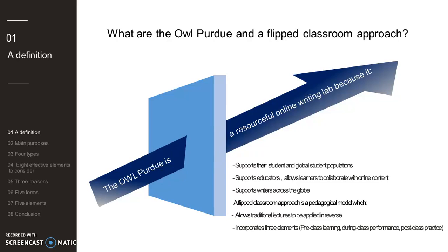The first element is the pre-class element, which allows students to engage in a flexible environment — they can choose when and where they would like to learn. The second is the during-class element, which activates involvement in knowledge construction and learning strategies. The last is the post-class element, where practice, performance, and feedback take place.